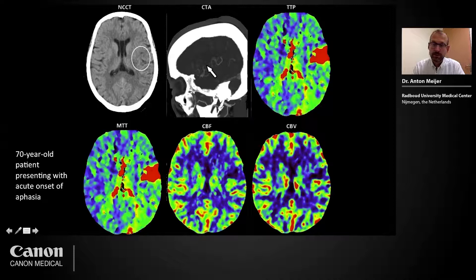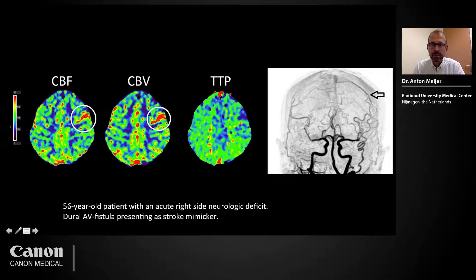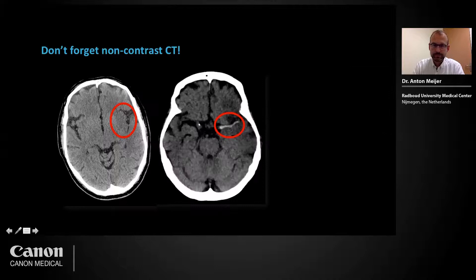CT perfusion can aid in the detection of intracranial vessel occlusions. This is a patient presenting with acute neurologic deficit on the right side. On brain CT perfusion, an asymmetry is seen in the left cerebral hemisphere, but this pattern is atypical of acute ischemic stroke — there is a pattern of hyperemia with an increase in cerebral blood flow and cerebral blood volume. When looking at the 4D CTA rendering of the CT perfusion acquisition, an abnormal early-enhancing cortical vein is easily seen. This was a patient who had an arteriovenous fistula presenting as a stroke mimic. Do not forget the importance of non-contrast CT, as early ischemia and intracranial vessel occlusions can also be detected there.